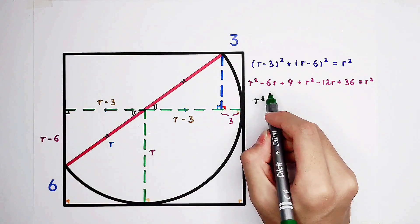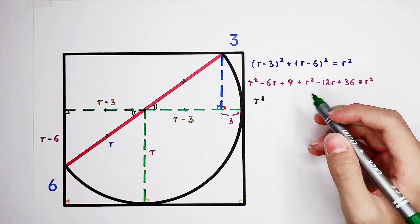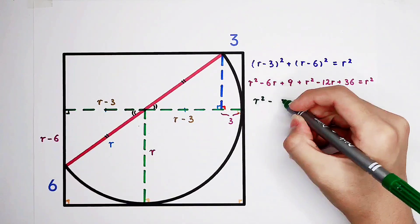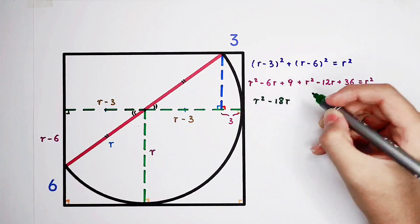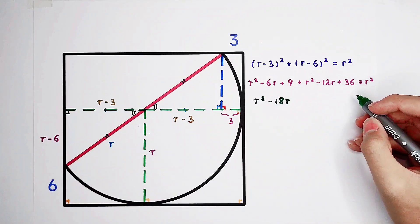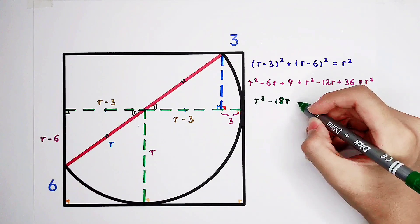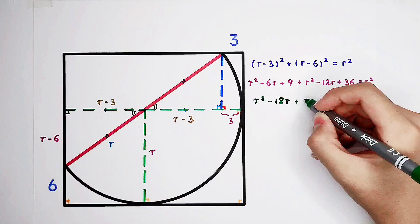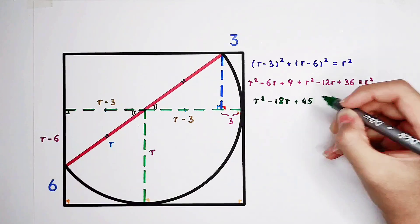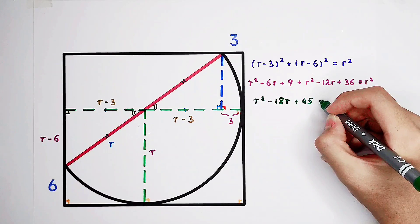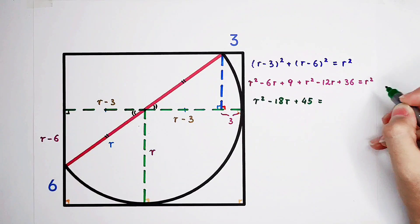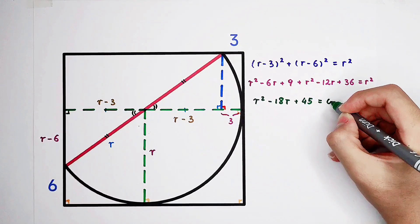Minus 6r, minus 12r, is minus 18r. Plus 9, plus 36, is plus 45. And the right-hand side is, of course, r squared minus r squared, which is 0.